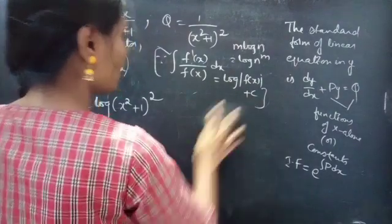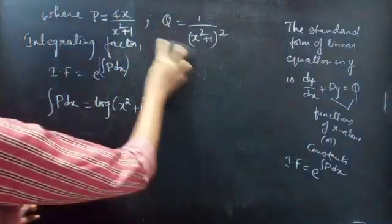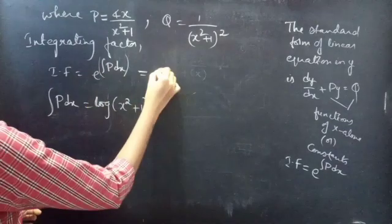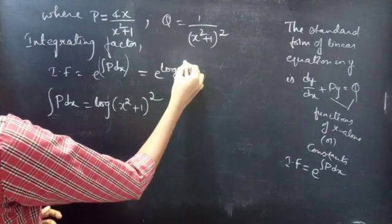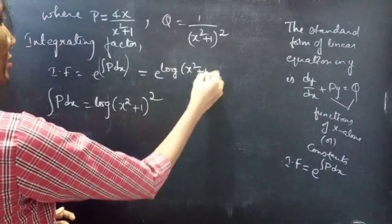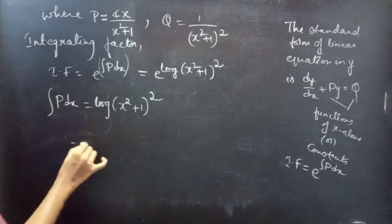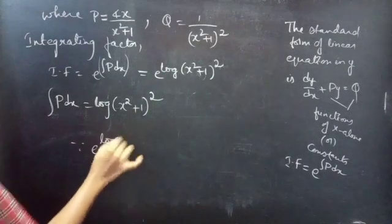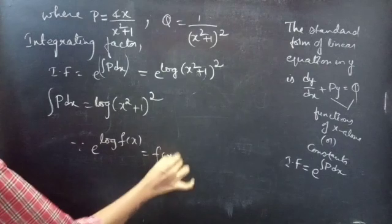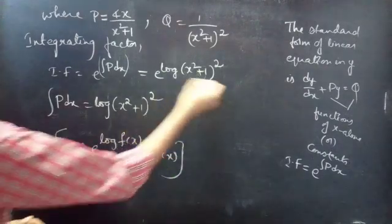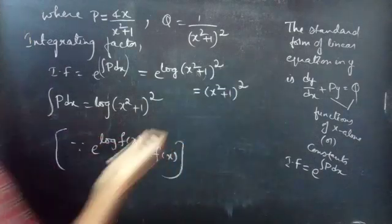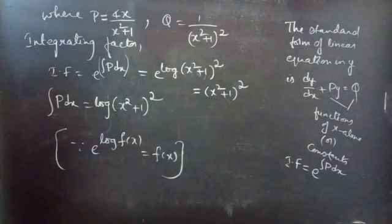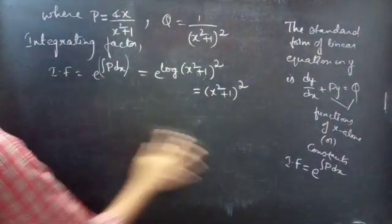Coming to the integrating factor: IF = e^(∫P dx) = e^(log(x² + 1)²). Since e^(log f(x)) = f(x), this becomes (x² + 1)². So (x² + 1)² is the integrating factor.